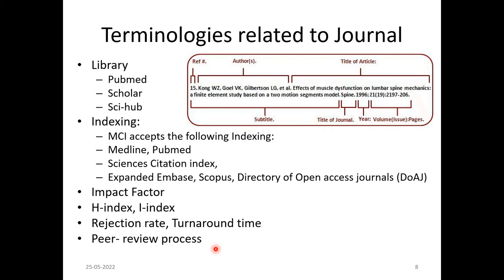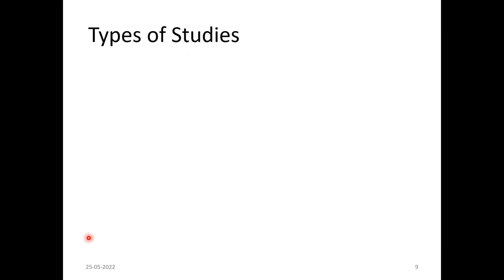You should also know what is meant by the peer review process. After sending a journal article to an editor, the editor submits it to a reviewer for technical expert review. The reviewers may accept, reject, or request modifications and provide key inputs. Any journal that is peer reviewed meets a basic standard quality requirement.